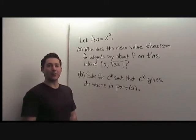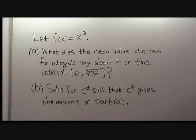This problem is about the mean value theorem for integrals. Let f of x equal x cubed. Part a: What does the mean value theorem for integrals say about f on the interval 0 to the cube root of 32? Part b: Solve for c star such that c star gives the outcome in part a.